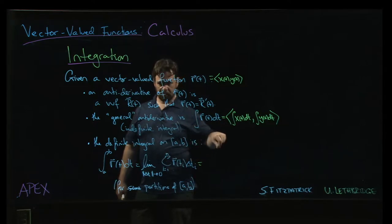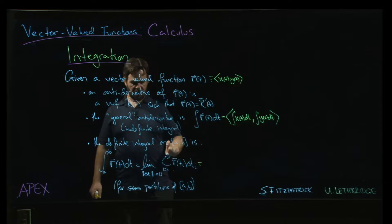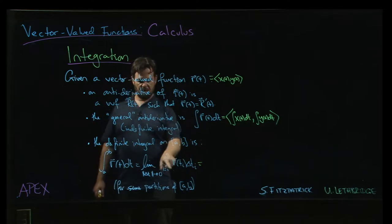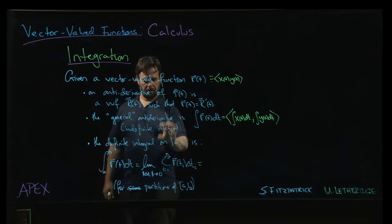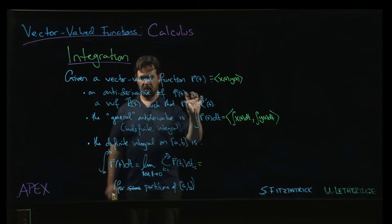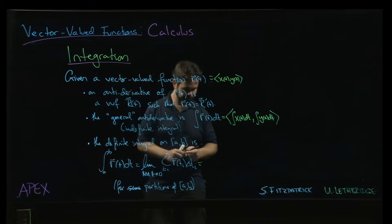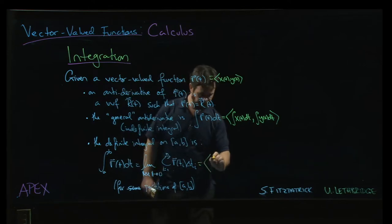But when we add vectors, we add corresponding components. When we take the limit of a vector-valued function, we take the limit component by component, right? And so you can kind of go through the details and realize that what you're going to get is sort of the limit of the sum of the xi's in the first component and then the limit of the sum of the yi's in the second component.